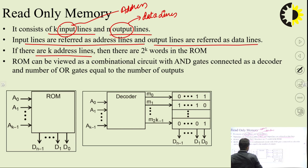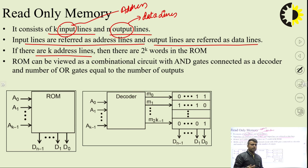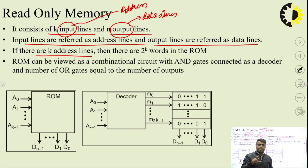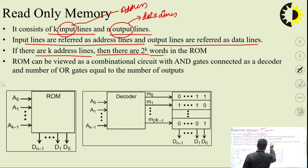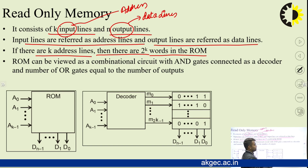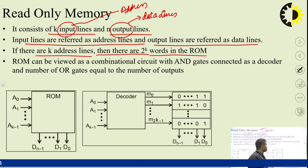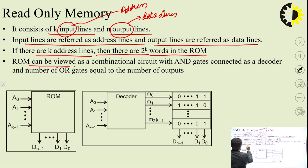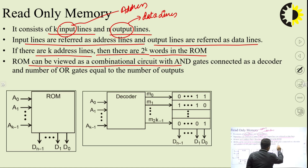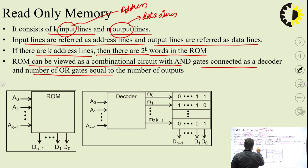Input lines are referred to as address lines and output lines are referred to as data lines. If there are k address lines, there are 2 raised to power k unique addresses. For example, with three bits, combinations go from 000 to 111, giving 8 addresses — that is 2 raised to power 3. So if there are k address lines, there are 2^k words (locations) in the ROM. ROM can be viewed as a combinational circuit with AND gates connected as a decoder and OR gates equal to the number of outputs.